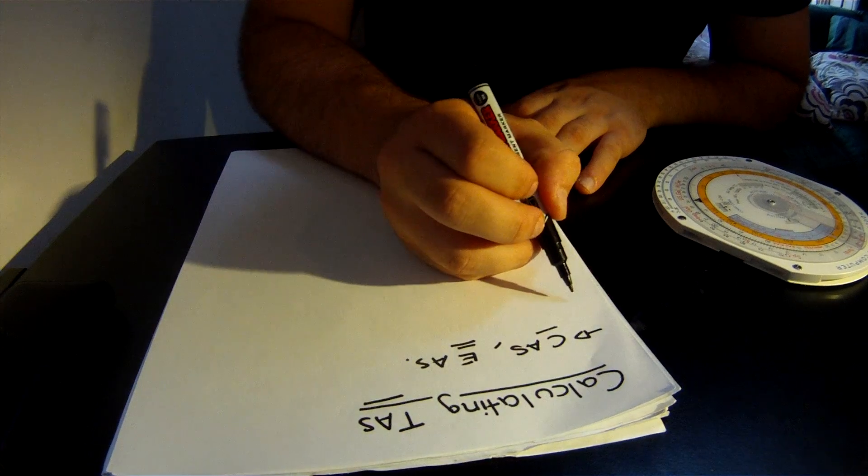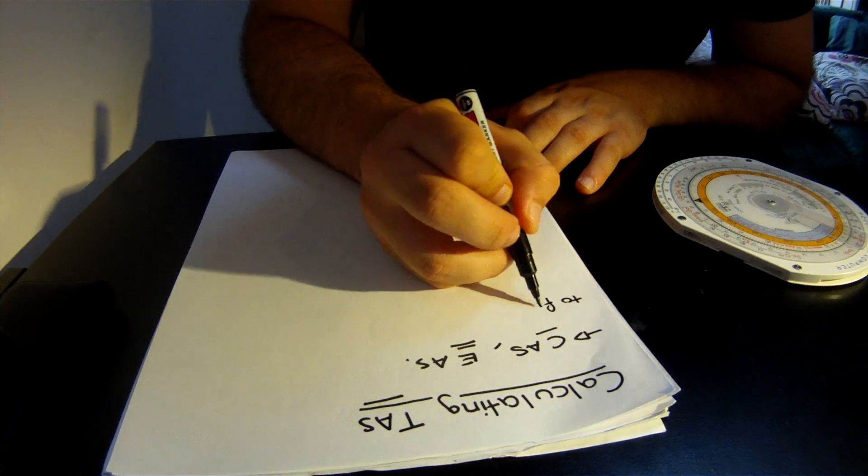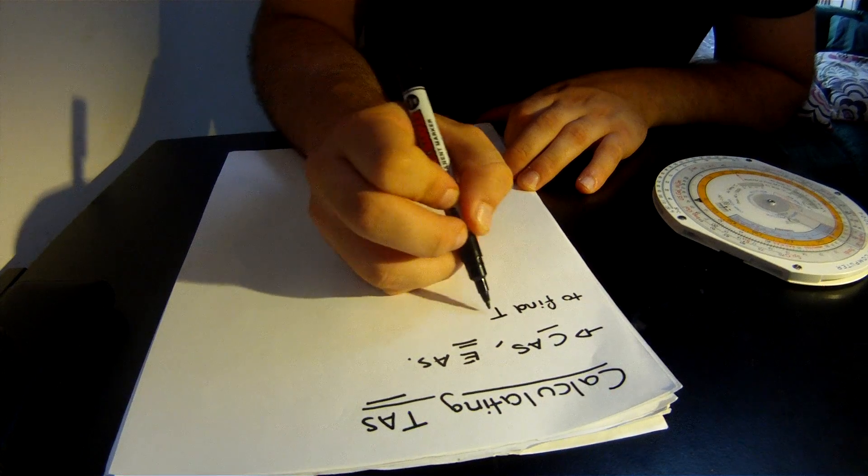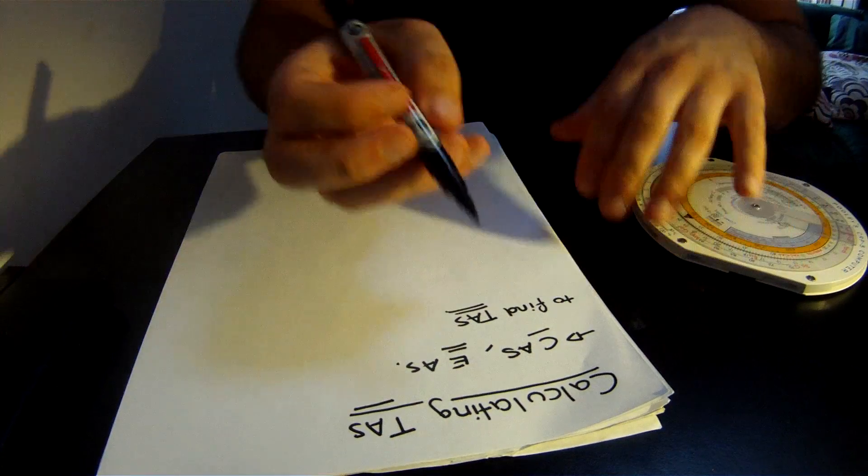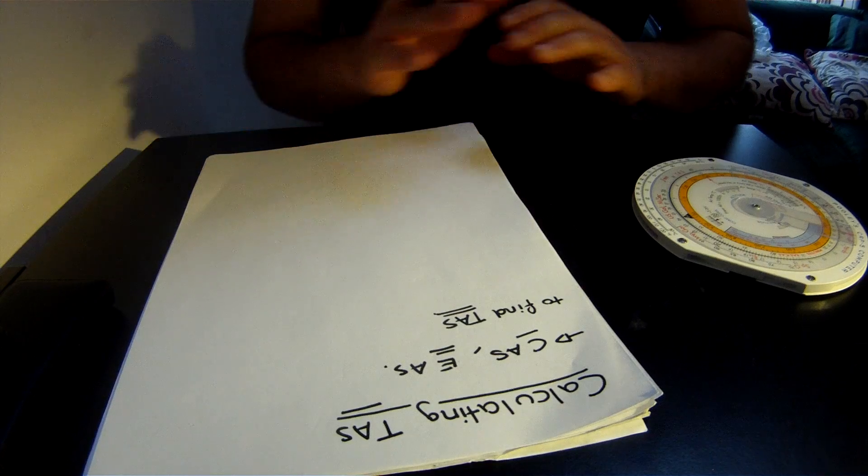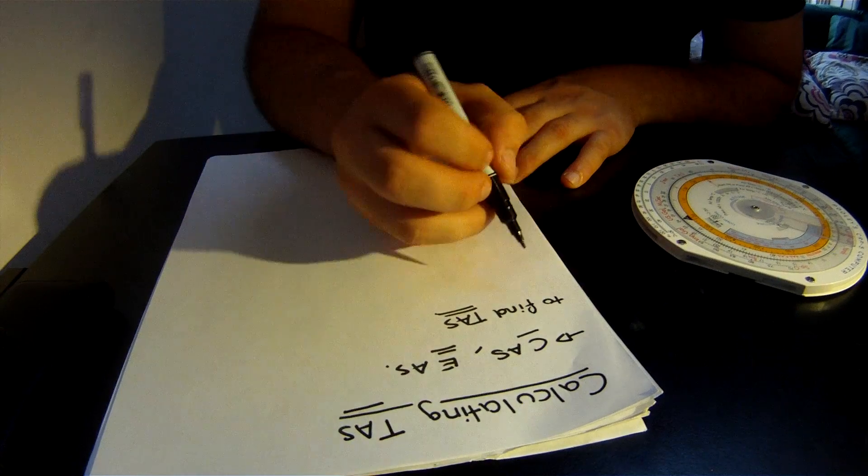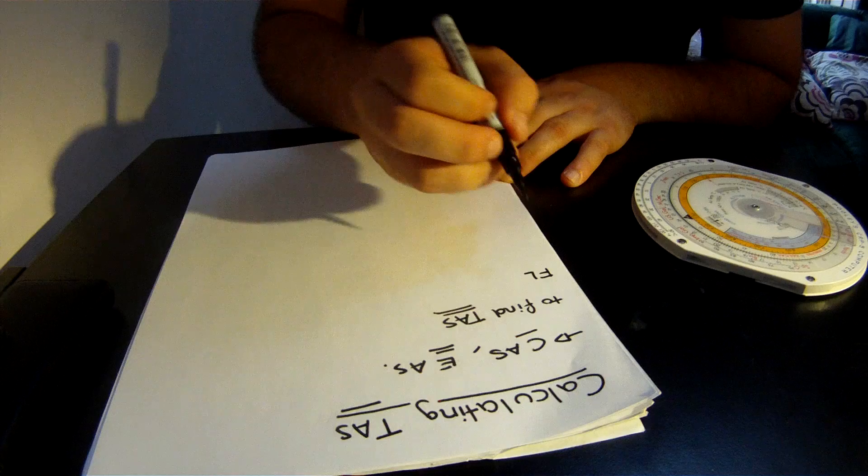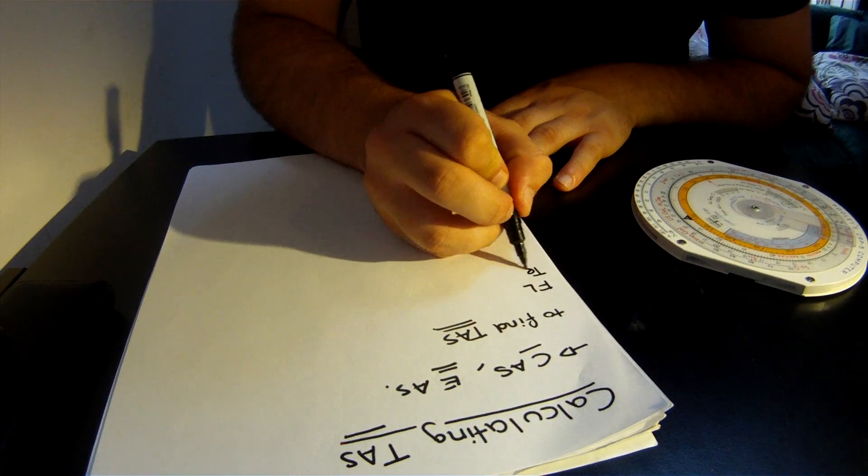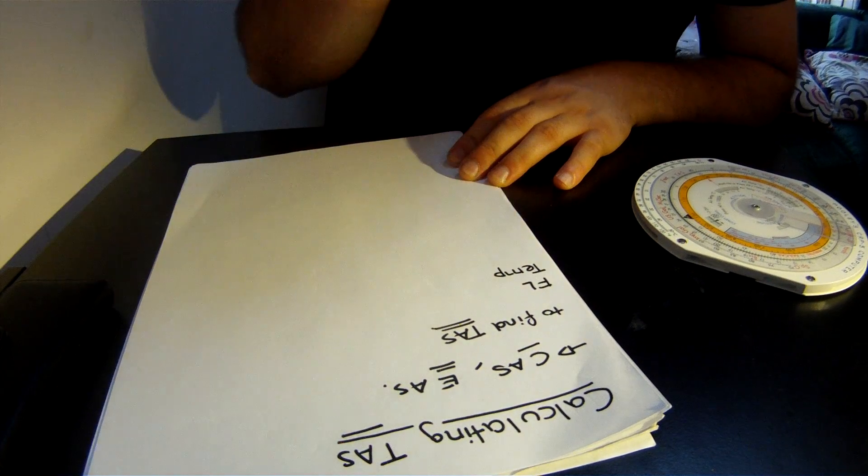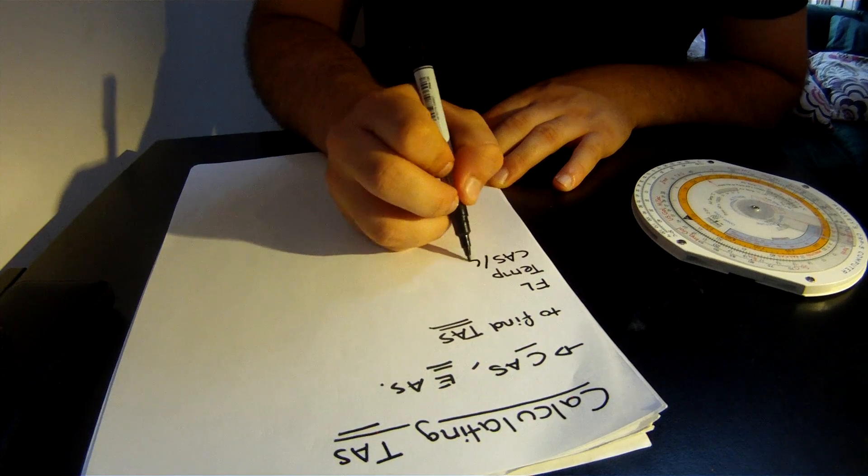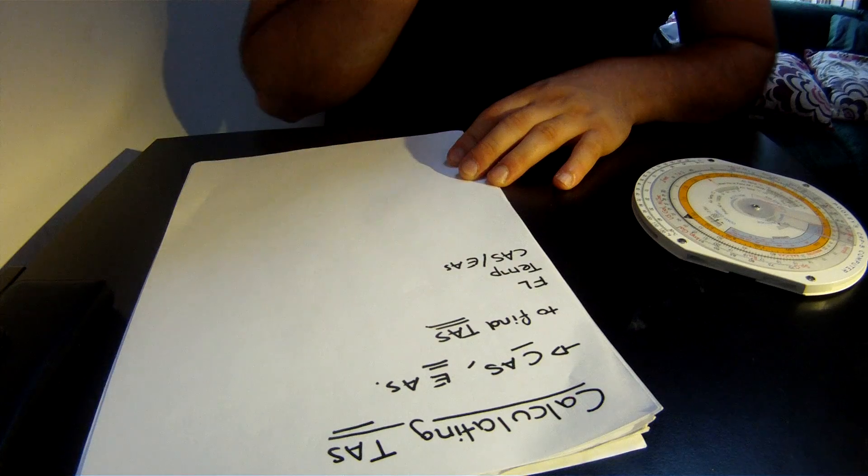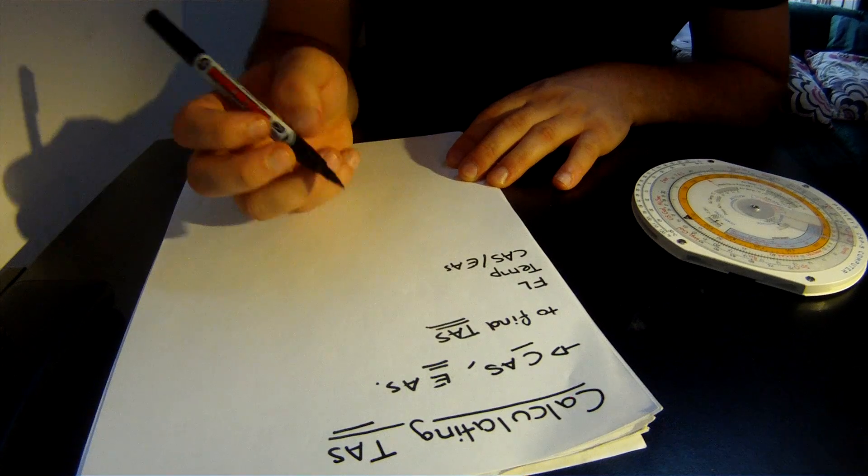Basically, there will be some questions where they'll give you a bunch of data and they'll ask you to find TAS, or true airspeed. These type of questions will give you loads of information: the flight level, the temperature, the CAS or EAS.